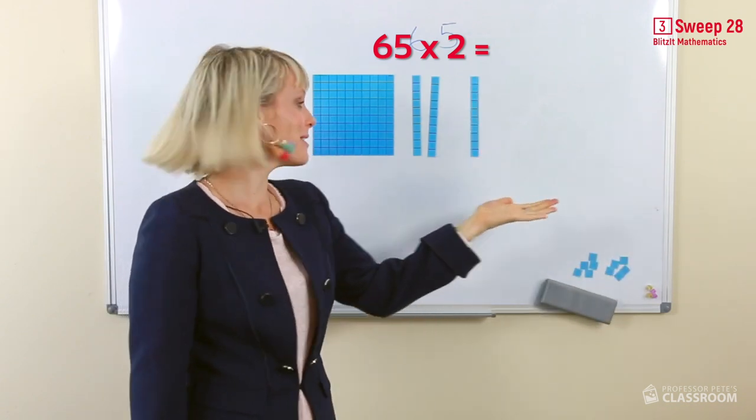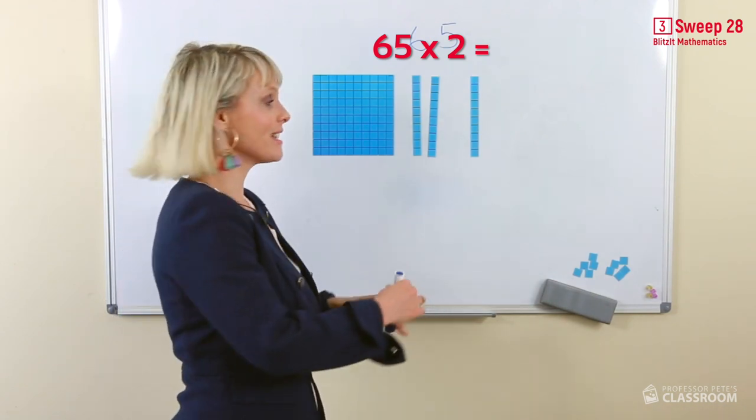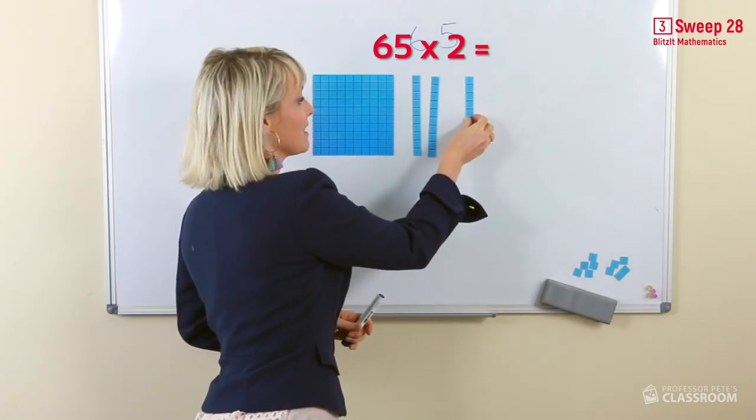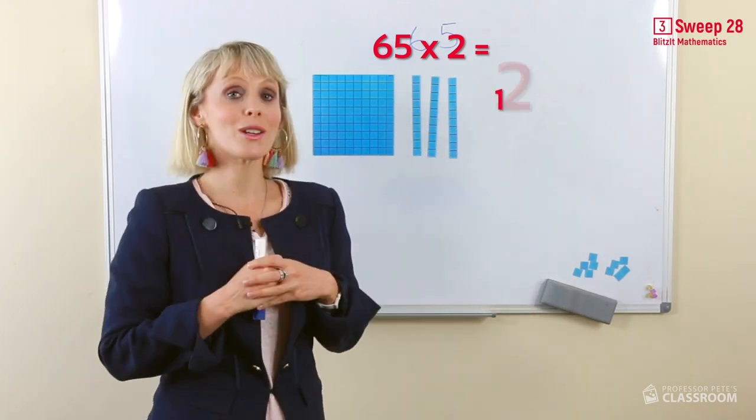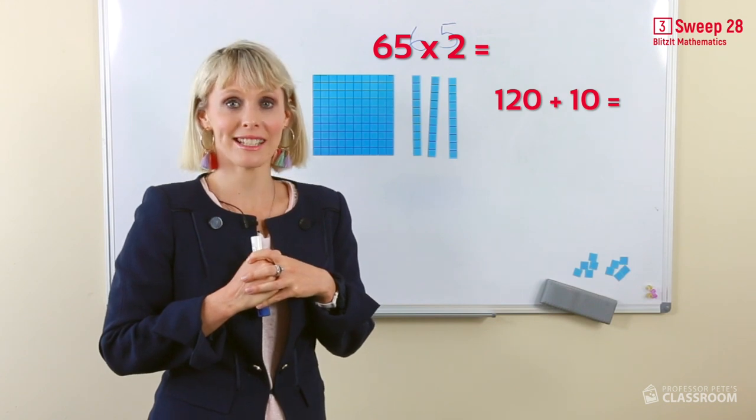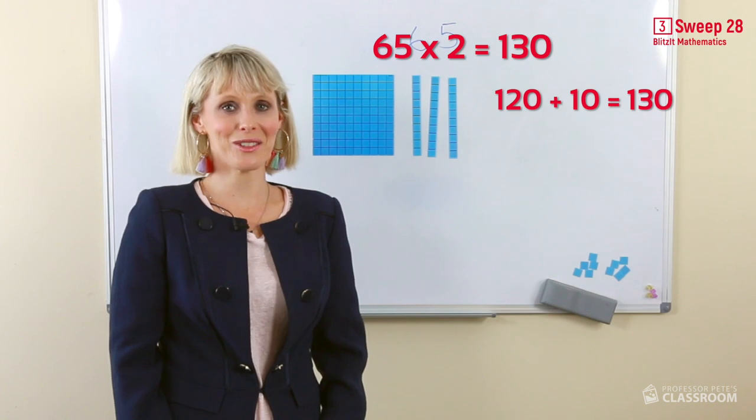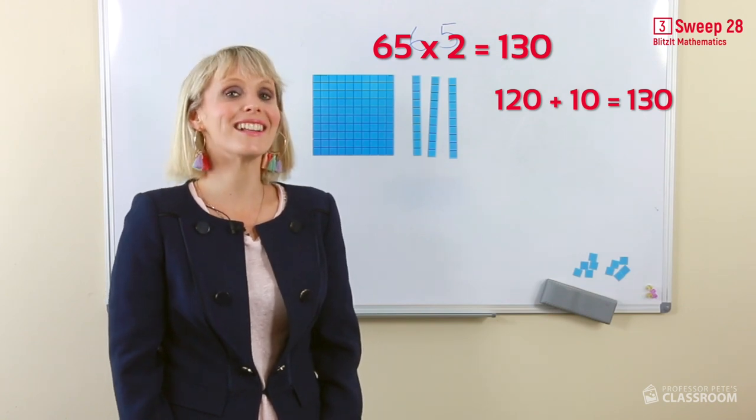Here we've regrouped. And here's our 10. Now we've got 12 tens. We add our additional 10. 12 tens add one 10 equals 13 tens. What's another way of saying that? 130. Well done.